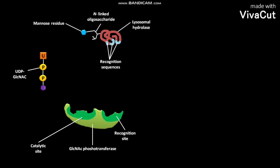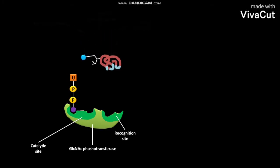The UDP-GlcNAc binds to the catalytic site of GlcNAc phosphotransferase. The lysosomal hydrolase binds to the recognition site of GlcNAc phosphotransferase. The recognition site in the GlcNAc phosphotransferase binds to the different recognition sequences in the lysosomal hydrolase.